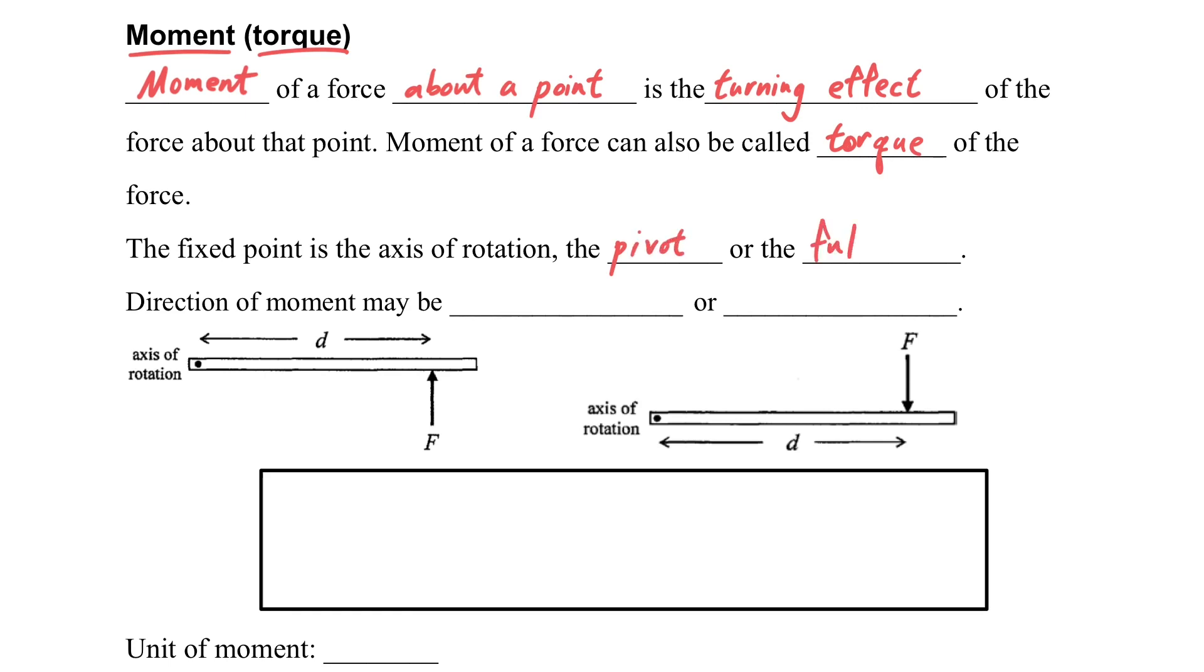The fixed point is the axis of rotation. Sometimes we call it pivot or fulcrum. So actually it's just a name. You can regard this like the hinge of the door. So it is axis of rotation. Usually we have to define it.